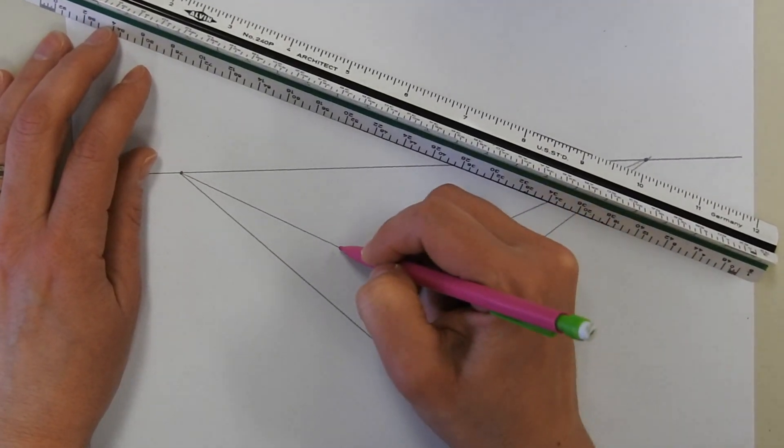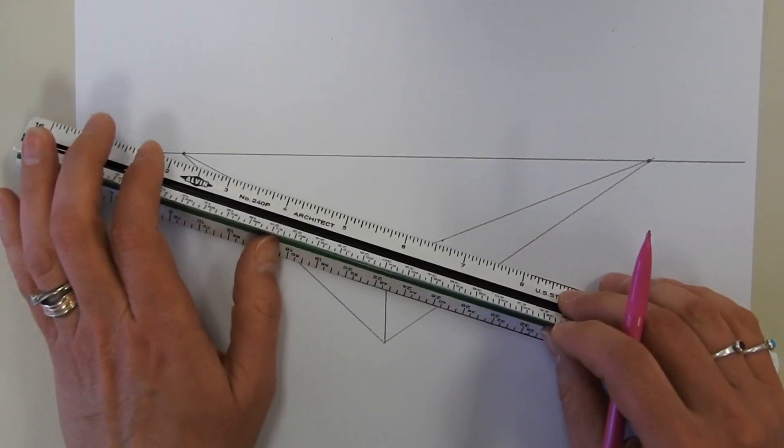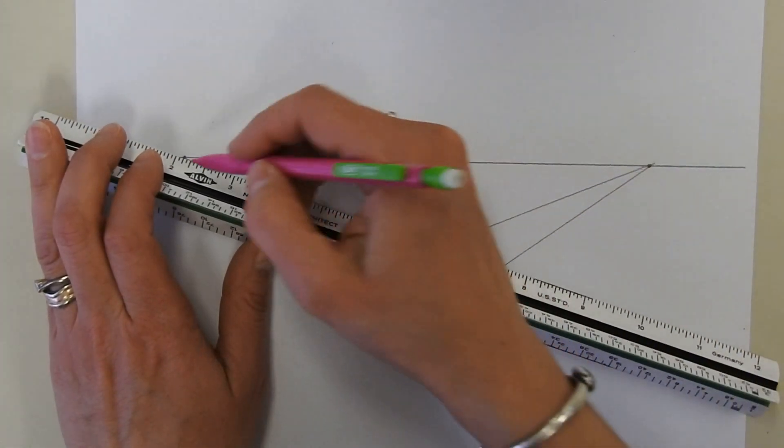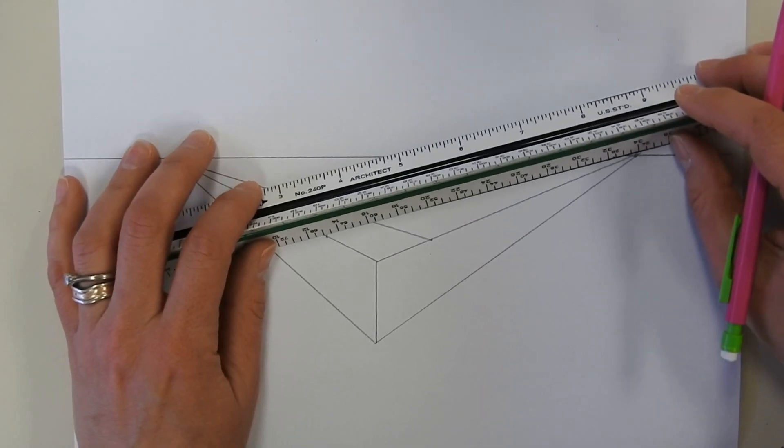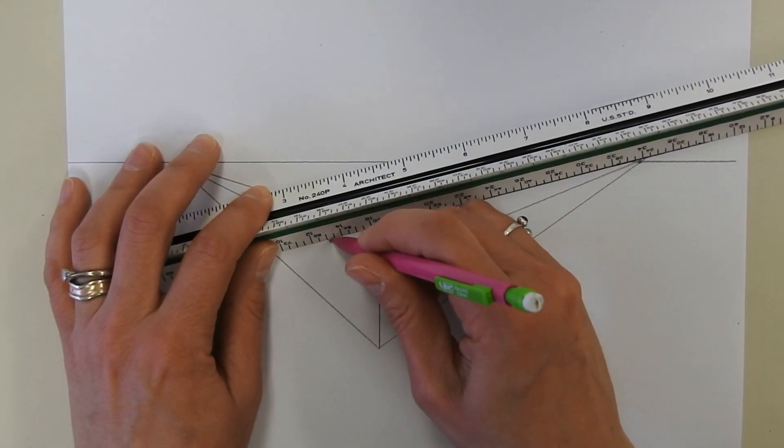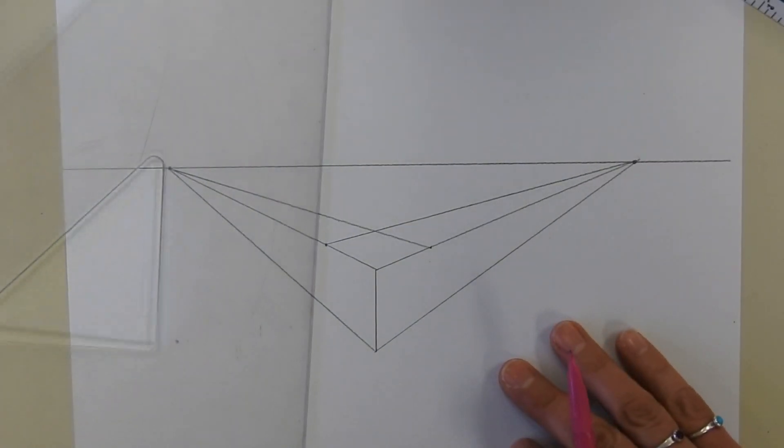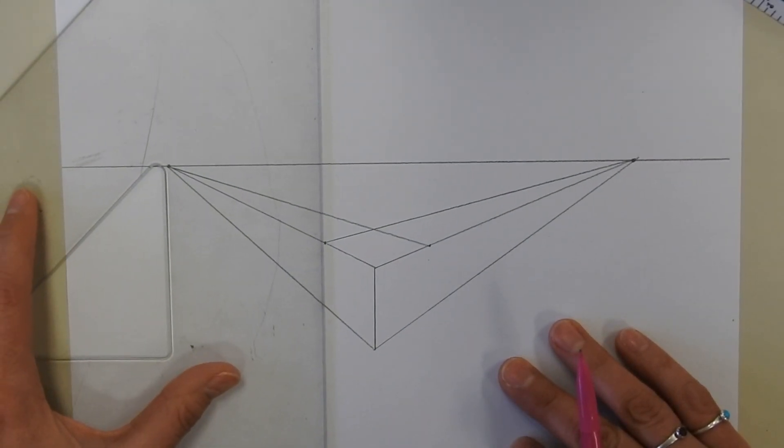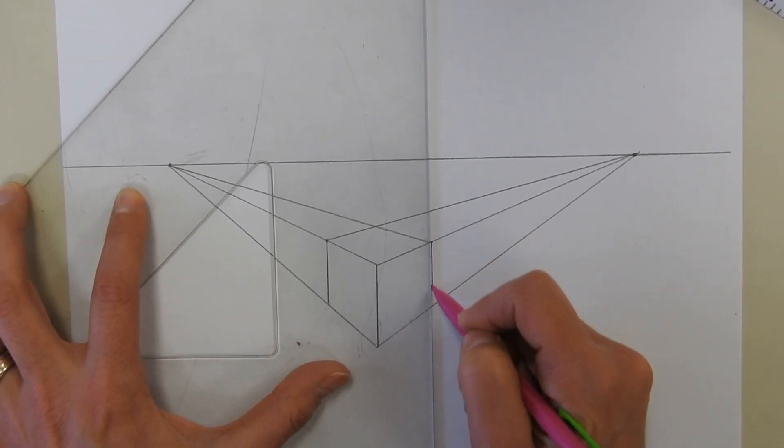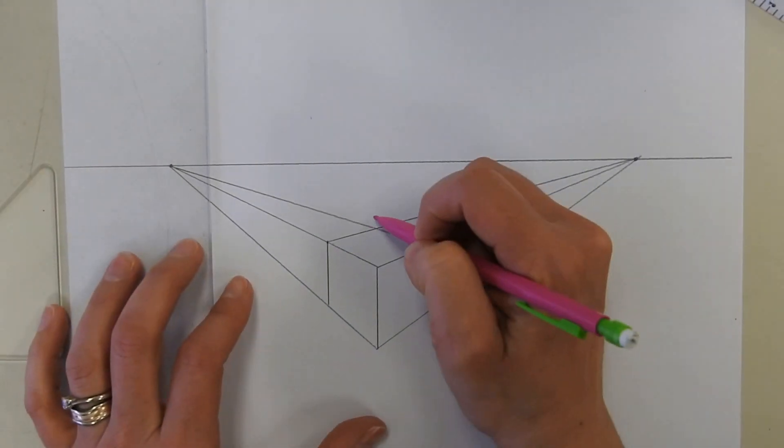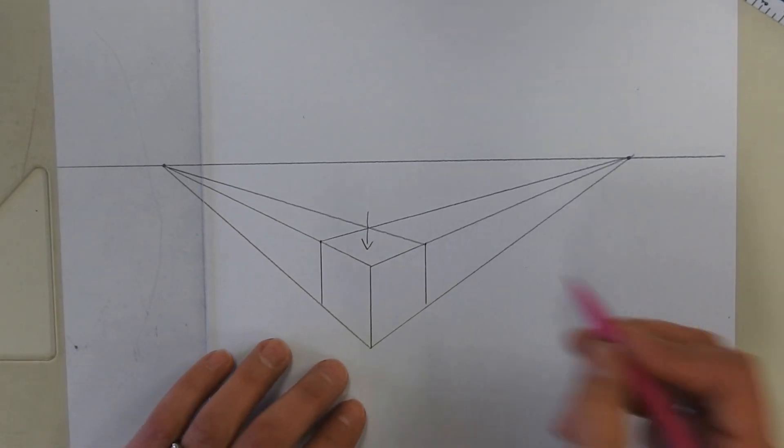So let's make the cube this size and the other one. All right, if you're able to see the top of the cube, there's a special name for that. Let me draw these lines in here. We can see down on the top of the cube - that's called a bird's eye view.